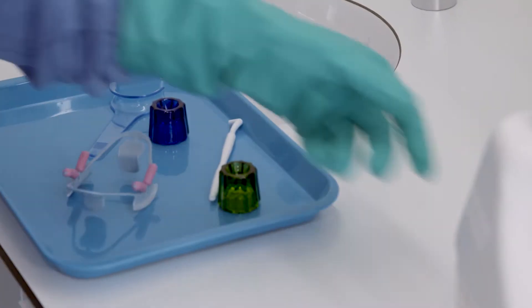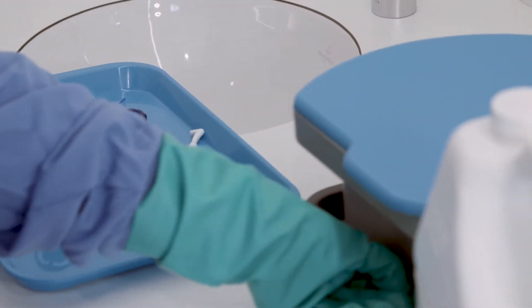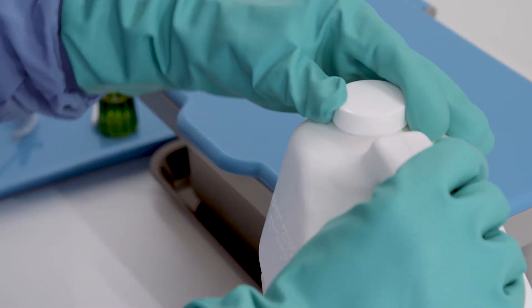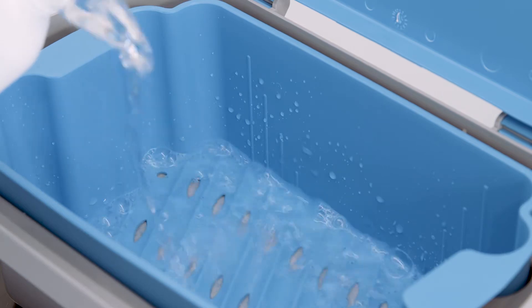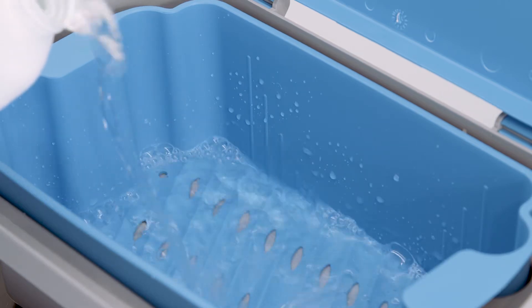Thoroughly clean and dry the device per the manufacturer's instructions. Pour Sporox 2 solution into ProSoak soaking tray or appropriate container. Do not dilute the solution with water.